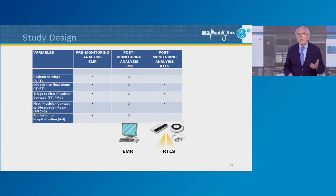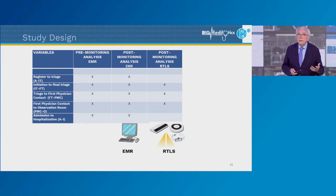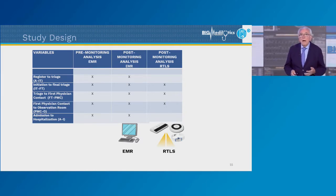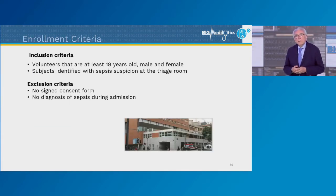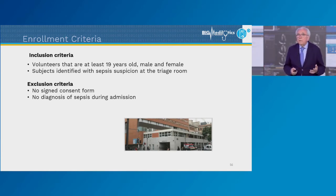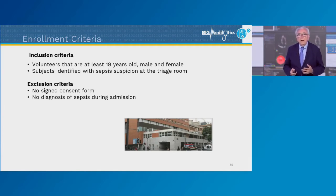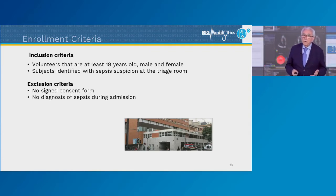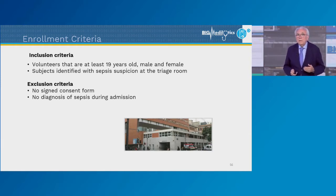During the monitoring phase, we confront information collected by timestamps in the electronic medical records — which is of course retrospective — with data from the RTLS. We selected adult subjects of both sexes who, in the triage area, had a very high risk of sepsis. We excluded subjects who did not sign the consent form and those where sepsis was not confirmed.